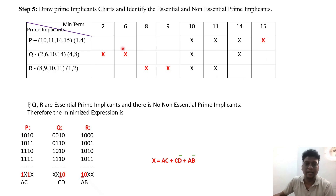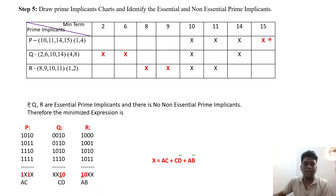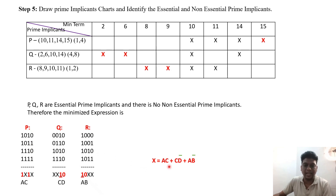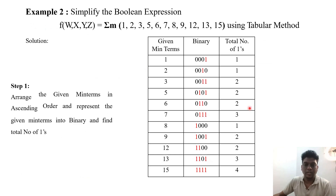Checking column by column: minterm 2 is covered only by Q, so Q is an essential prime implicant. Minterm 6 is also covered only by Q. Minterms 8 and 9 are covered only by R, making R essential. Minterm 15 is covered only by P, making P essential. Every row has at least one essential minterm marked in red, so P, Q, and R are all essential prime implicants with no non-essential ones. The minimized expression from these groupings is AC + CD̄ + AB̄.